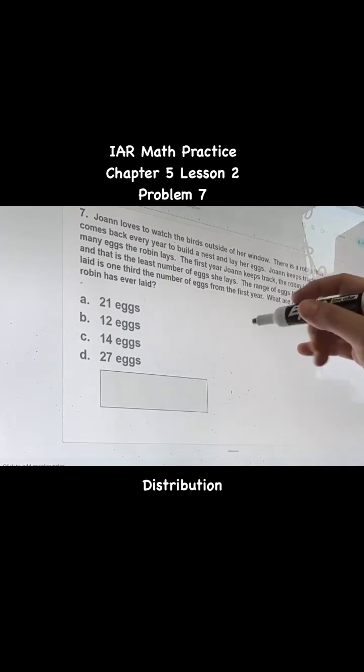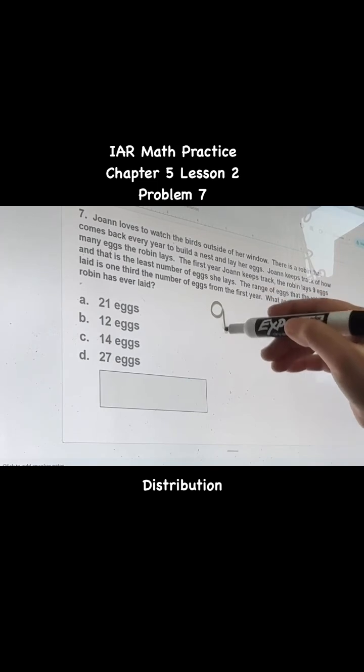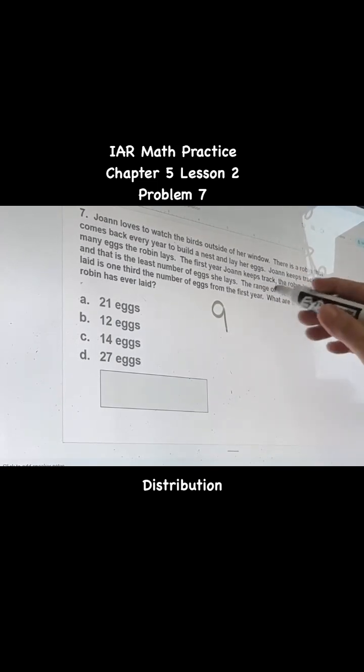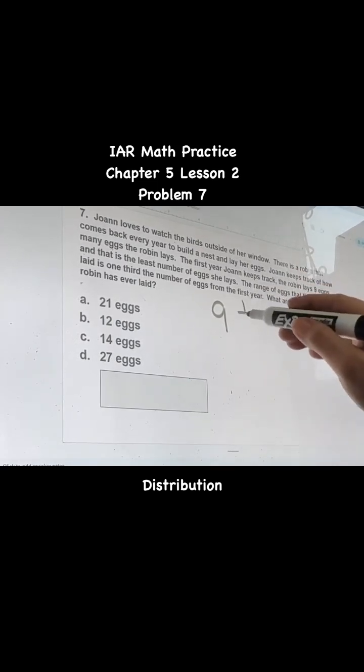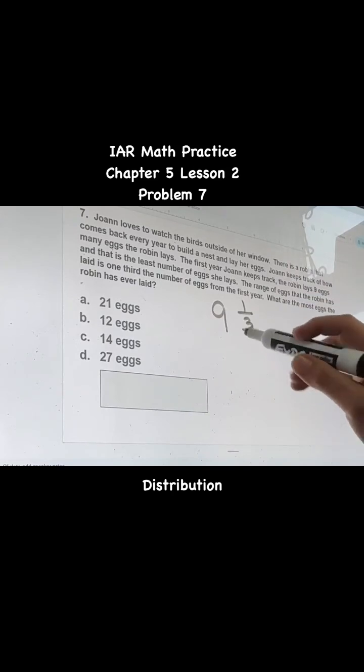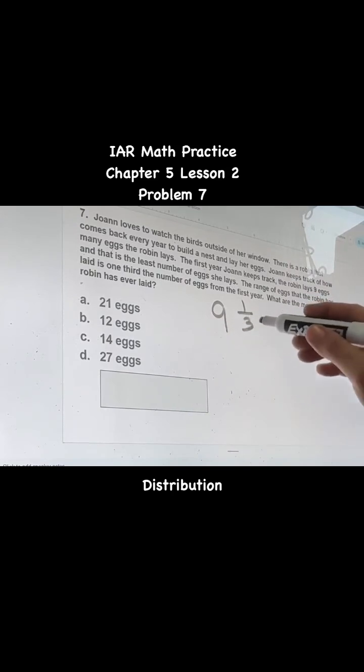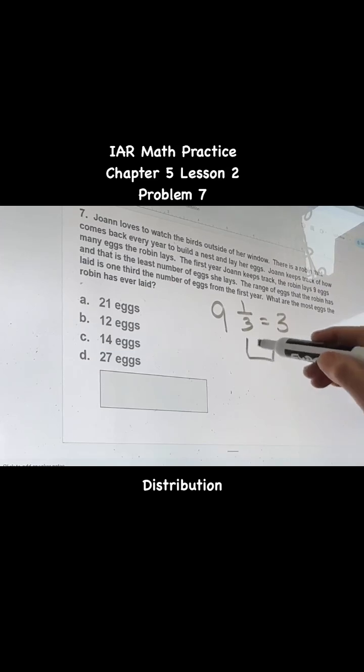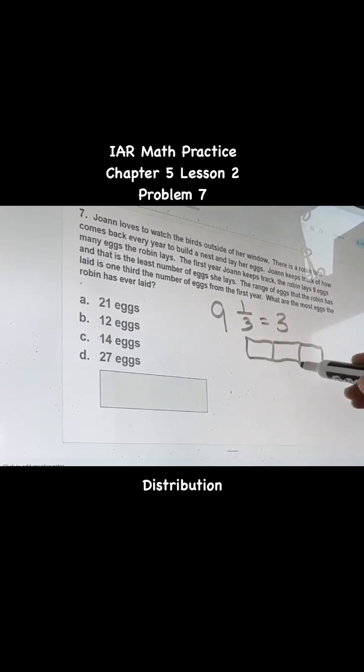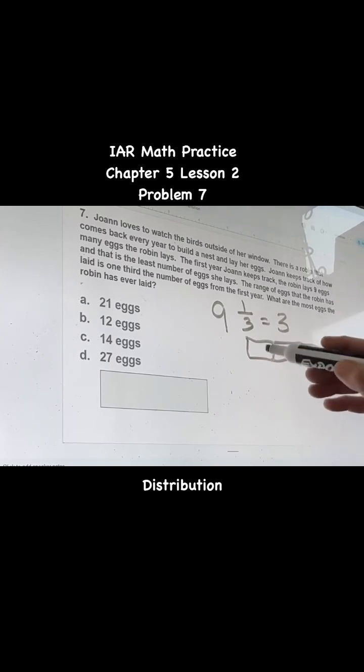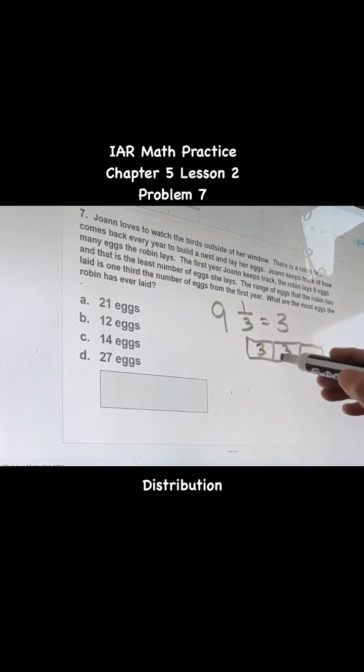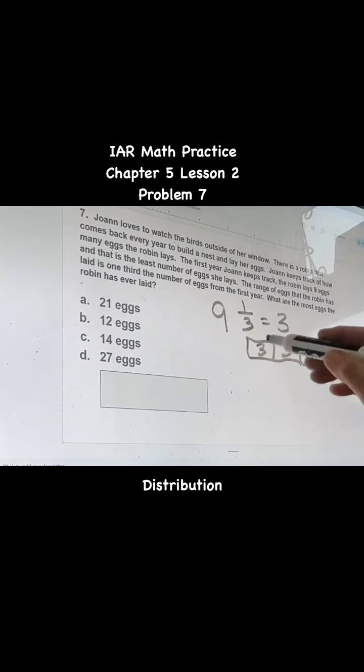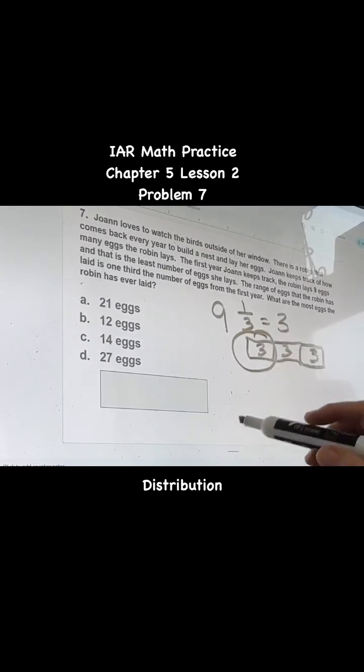Okay, so to start off, we know that we have nine as the lowest number, and we know the range is one-third of this number. So one-third of nine equals three, right? So if you drew it, pretend they're all equal, one-third, three plus three is six, plus three is nine. So one-third would be three.